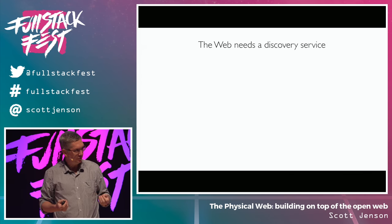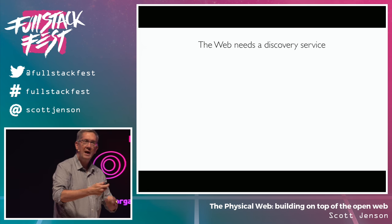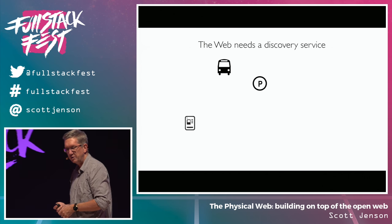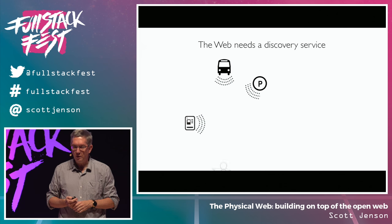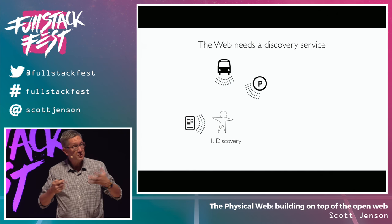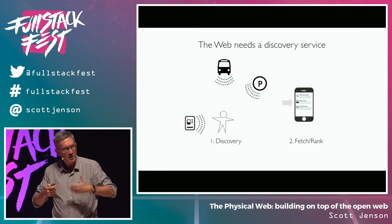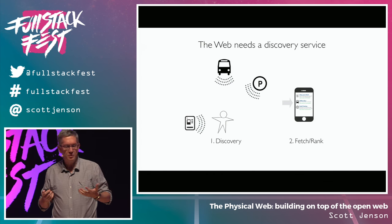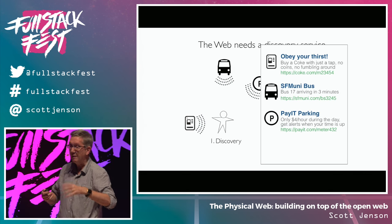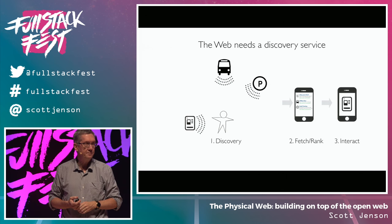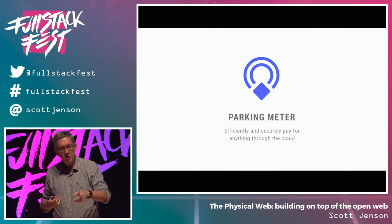The whole point of the physical web is: how do we have a discovery service for the web so that I can walk up to something and get its URL without having to fiddle around too much? The intention is: I walk into a space where devices are broadcasting their URLs. I want to discover what is around me — not just see the URL, but fetch information about them, rank them, and get a list that says here's a vending machine, here's a bus stop. Then if I pick one, it just takes me to the website.